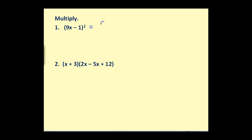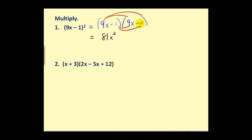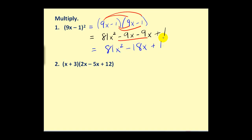We have to write it out as 9X minus 1 times 9X minus 1, and then find the product. So we would have 9X times 9X or 81X squared; 9X times negative 1 is negative 9X; then we get another negative 9X; and negative 1 times negative 1 is positive 1. Combining our like terms, we have 81X squared minus 18X plus 1.